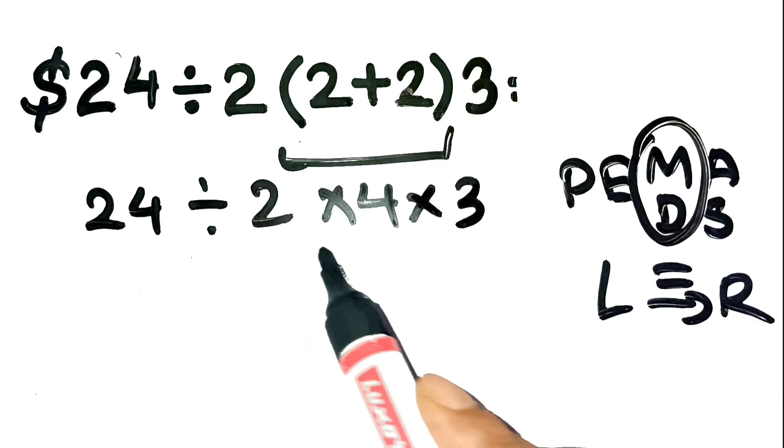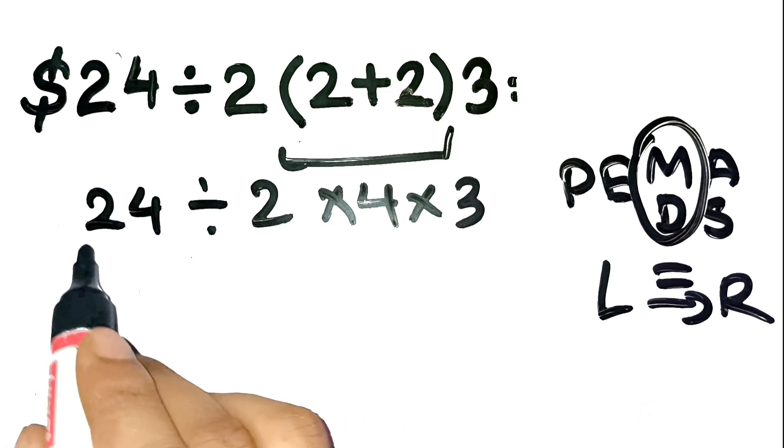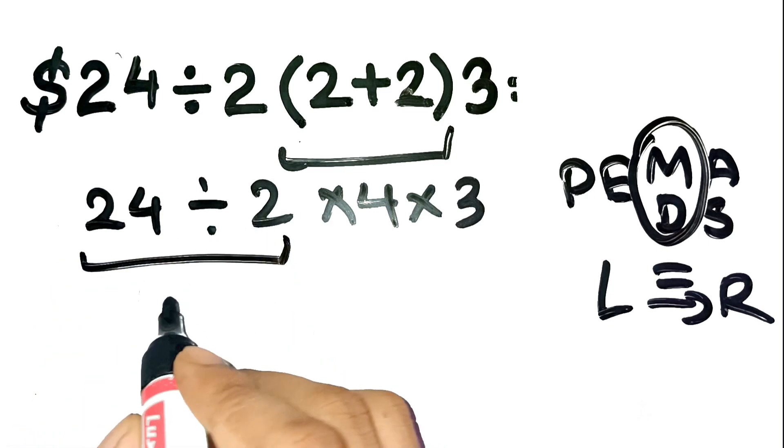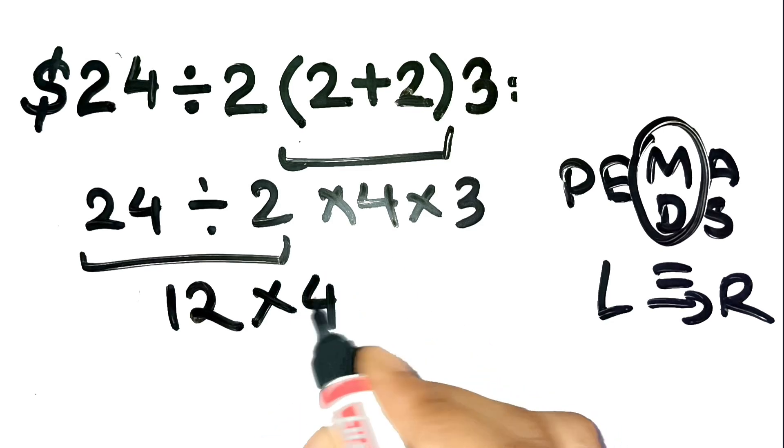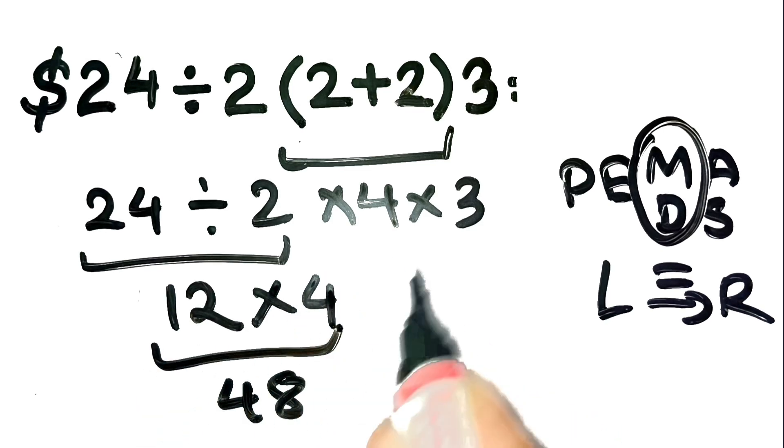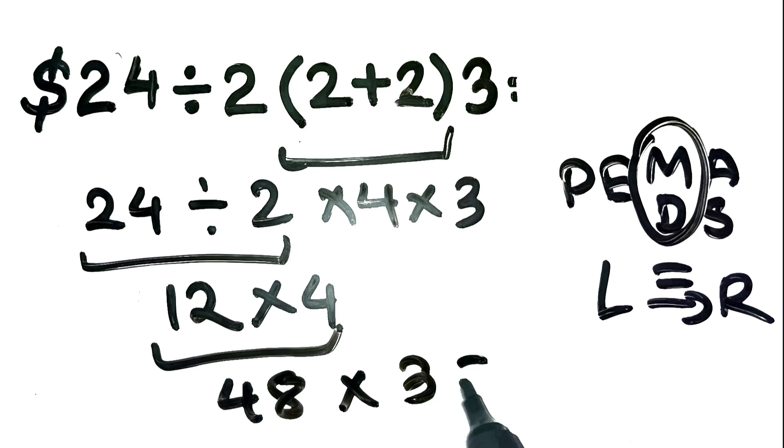Remember, no shortcuts. Go strictly left to right. First, 24 divided by 2 equals 12. Then, 12 times 4 equals 48. Then, 48 times 3 equals 144.